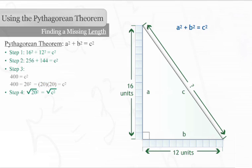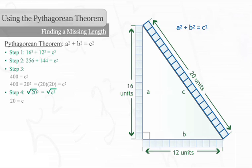The fourth and final step is to calculate the square root of both sides of the equation. 20 equals C. Side C, the hypotenuse, is 20 units long.